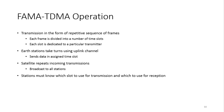FDMA and TDMA operations: Transmission occurs in the form of a respective sequence of frames. Each frame is divided into a number of time slots, and each slot is dedicated to a particular transmitter. Each station takes turns using the uplink channel, sending data in its assigned time slot. The satellite repeats the incoming transmission and broadcasts to all stations. Each station must know which slot to use for transmission and which to use for reception.